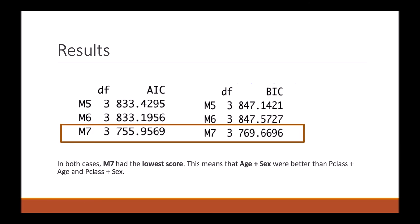And here are the results of the models I just gave as an example. In both cases, M7 had the lowest score. So this means that age and sex were better than passenger class, and age and passenger class and sex, in predicting whether a person survived or not.